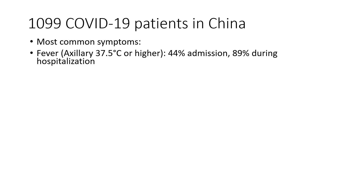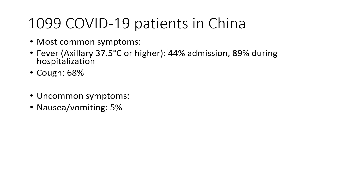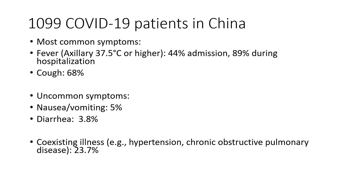The most common symptoms were fever. 44% of patients had fever on admission and 89% during hospitalization. 68% of patients had cough. Uncommon symptoms were nausea and vomiting in 5% and diarrhea in 3.8%. 23.7% of patients had a coexisting illness such as hypertension or chronic obstructive pulmonary disease.